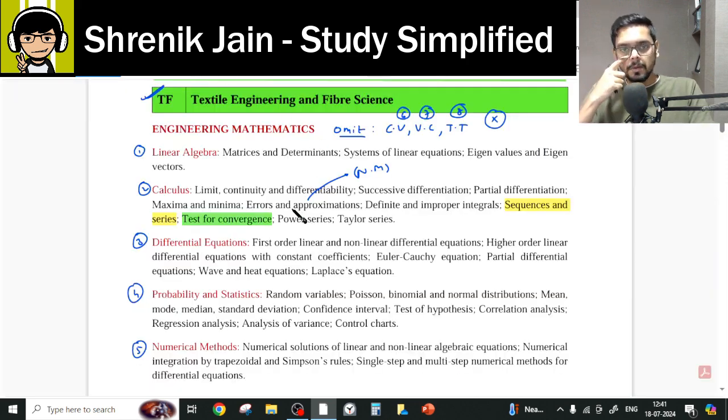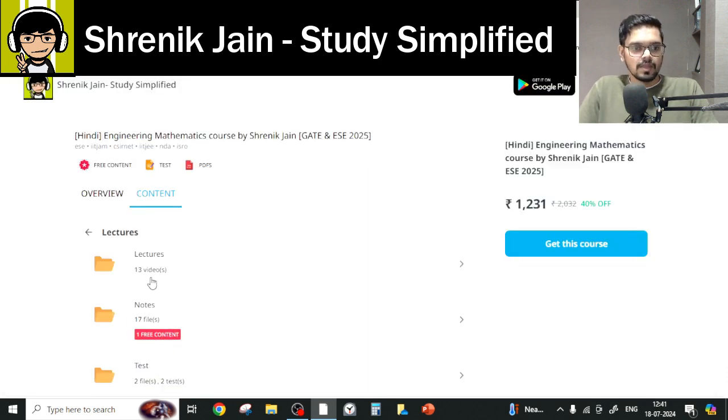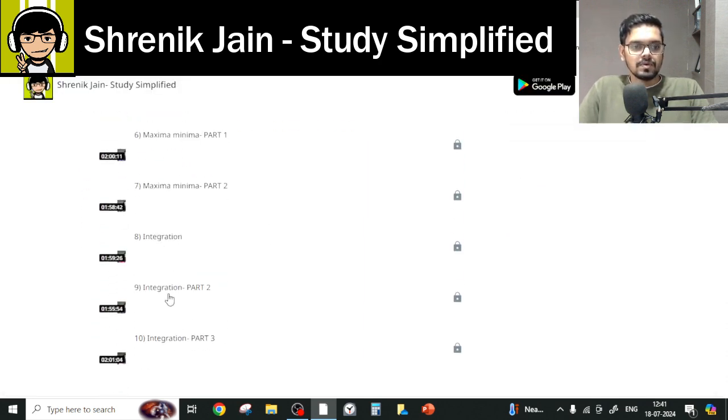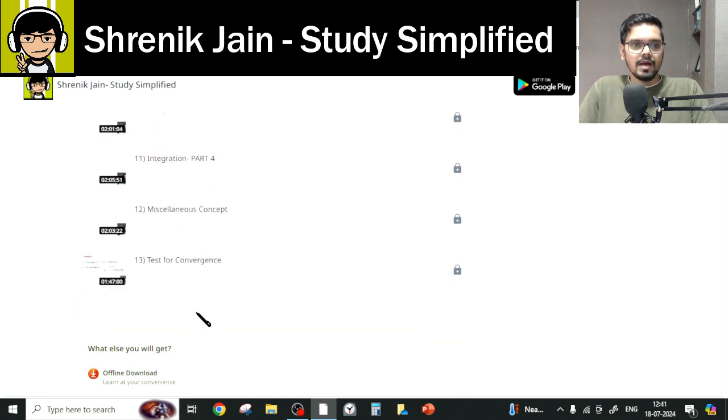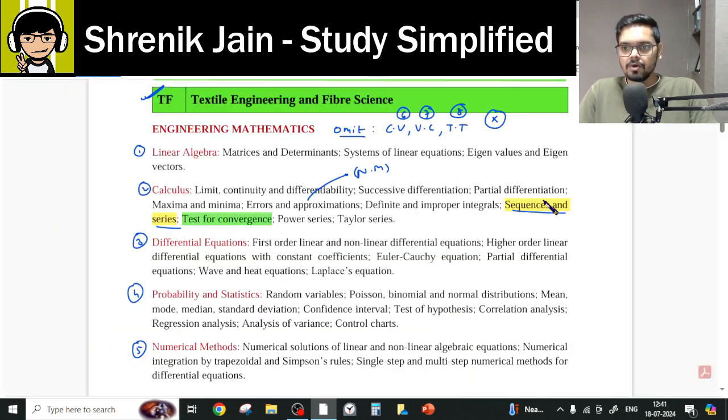And let me make something clear about the confusions related to the syllabus. First of all, the confusion is, Sir, Sequence and Series is not present in your folder. If you go to the Calculus folder, lectures, you will see Sequence and Series is not there. Why? Reason is very simple because it is covered in Aptitude course. So if you are watching Aptitude course from my app, then it is covered there, Sequence and Series.